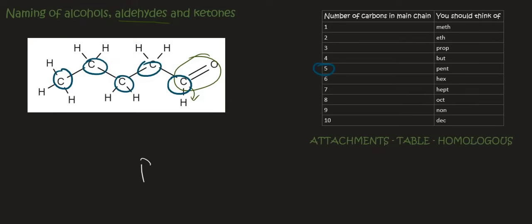So I'm going to write down the word pent. Then there are no attachments. So now how do I show that it is an aldehyde? Well just like with alcohols, for aldehydes you're going to say pentan. Now aldehydes are always on the side. So they will always take place at carbon number 1.